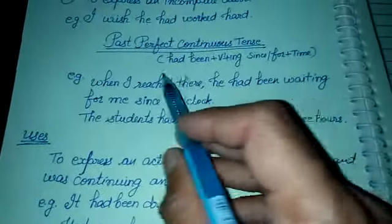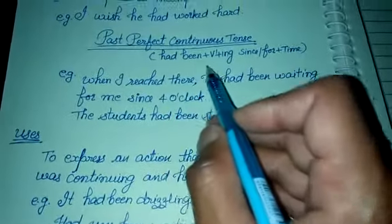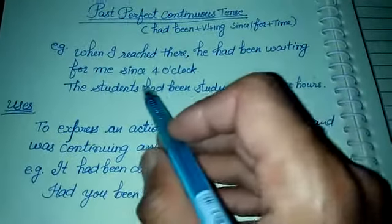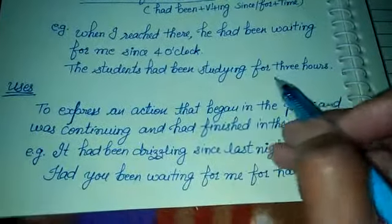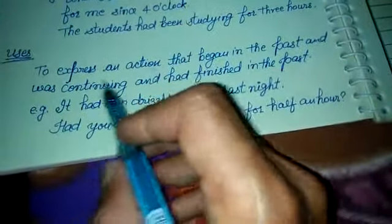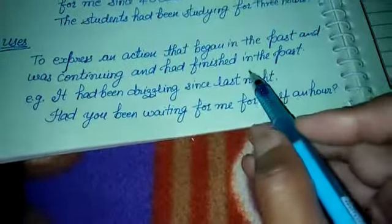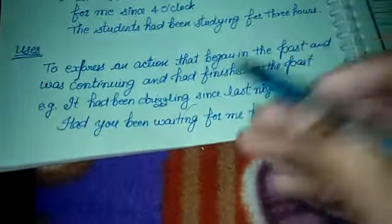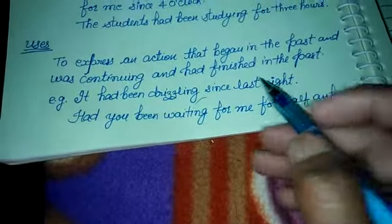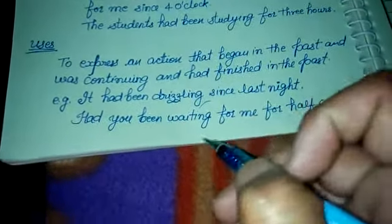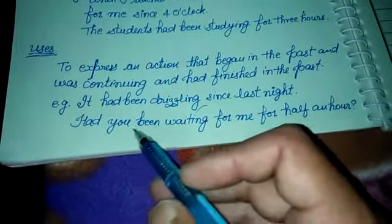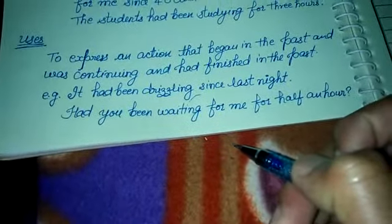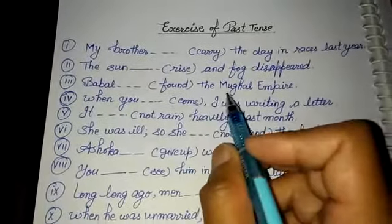Our next tense is Past Perfect Continuous Tense. Its ID is: had been + first form + ing, since/for + time. For example: 'When I reached there, he had been waiting for me since 4 o'clock.' 'The students had been studying for 3 hours.' We use this tense to express an action that began in the past and was continuing in the past. For example: 'It had been raining since last night.' 'Had you been waiting for me for half an hour?' This concludes our past tense discussion.